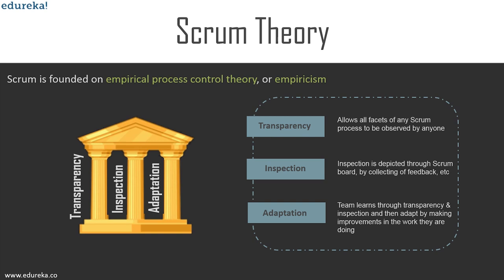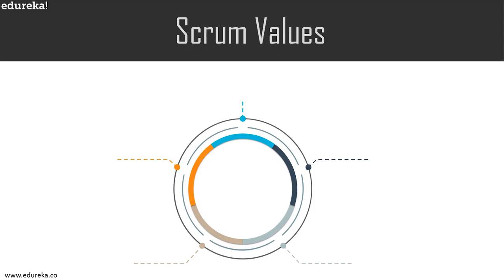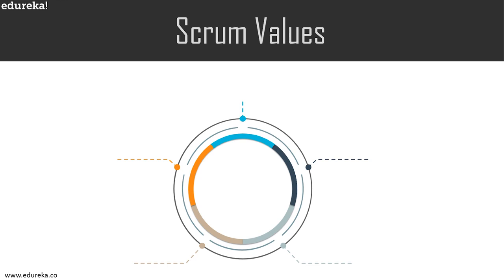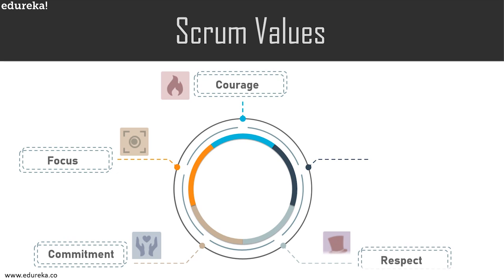With empirical process control, you don't fix the scope of the product or the process of how to build it. Instead, you create a small shippable piece of product in short cycles, inspect what and how you created it, and adapt both the product and the way you built it, with built-in mechanisms for transparency to enable clear inspection. In addition, Scrum adds five values that each team member uses to guide decision-making: courage, focus, commitment, respect, and openness.